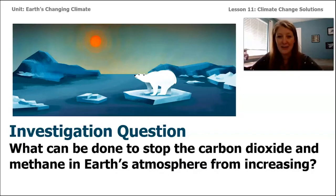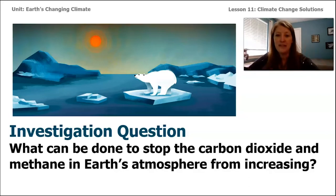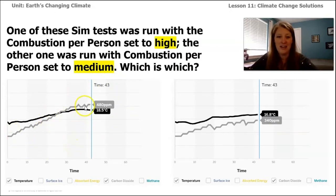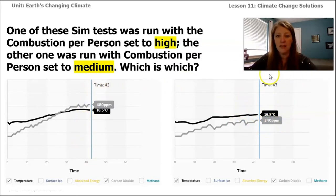What we're trying to understand right now in this part of the unit is what can we do — what can be done to stop the carbon dioxide and methane that's been building up in our atmosphere because of human activities? I wanted to show you this really fun screenshot. This is actually from the Earth Changing Climate Sim when it's on Human Activities Mode. If you look at the picture on the left, you can see there is a gray line and also a black line, and the same is happening in the picture on the right. The black line represents temperature and the gray line represents carbon dioxide.